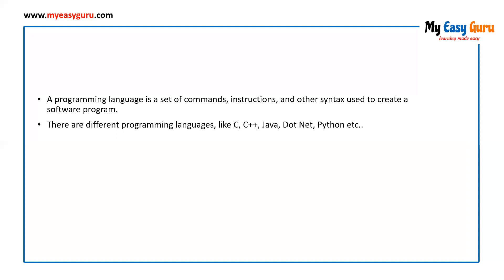Every language that we know of is a human understandable language. It's not that programming languages can be understood by the systems — programming languages are understandable by the users. Every programming language has some compiler or interpreter, which is responsible for converting human programs into machine understandable codes. They convert human programs into byte code, which can be understood by the systems.